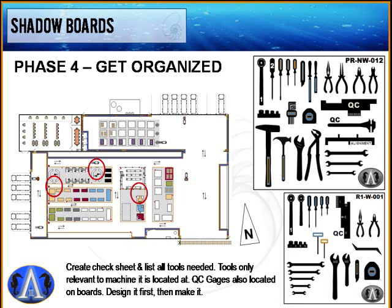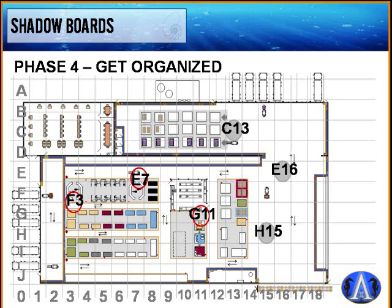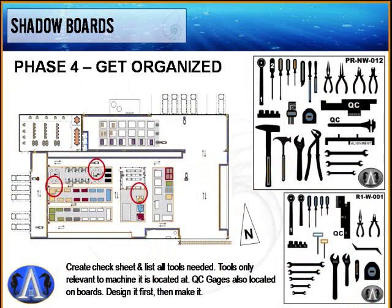Include hammers, pipe wrenches, channel locks, specialty gauges, and other relevant tools on the check sheet. Mark out shadow board locations on a floor plan using a grid system — columns 1, 2, 3 and rows A, B, C — and assign each board a grid coordinate. Only include tools relevant to the machine located at that line, plus QC gauges. Design the board layout first before purchasing materials.